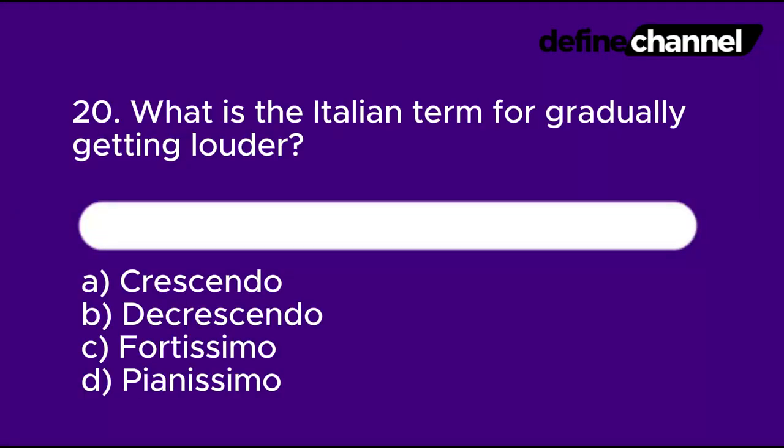Question 20: What is the Italian term for gradually getting louder? A. Crescendo. B. Decrescendo. C. Portissimo. D. Pianissimo. In 10 seconds, which do you think is the correct answer?